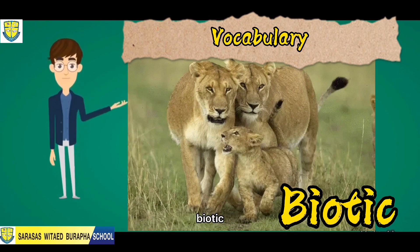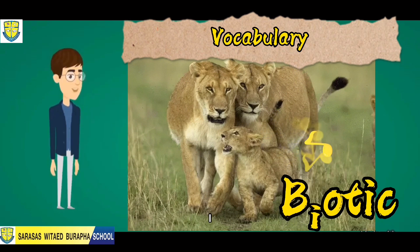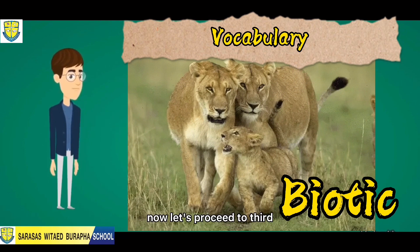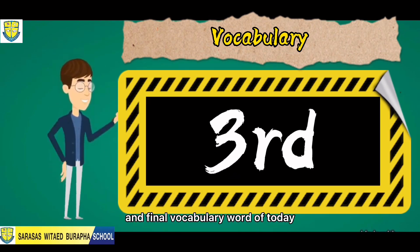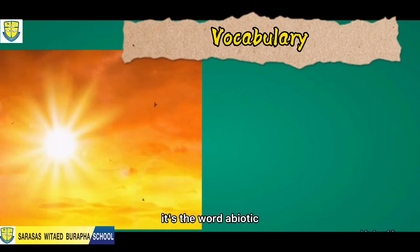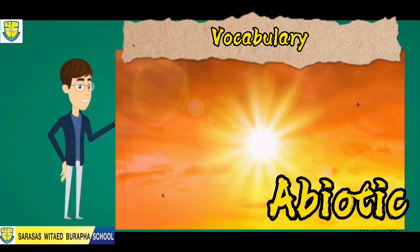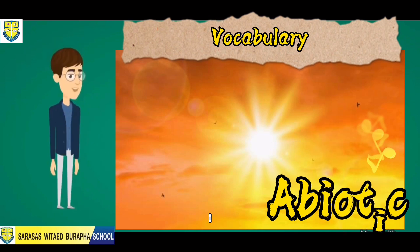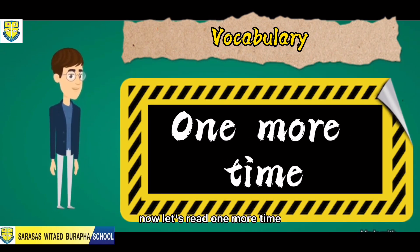Let's spell the word biotic: b-i-o-t-i-c. Very good. Now let's proceed to our third and final vocabulary word of today. It's the word 'abiotic.' Let's spell abiotic: a-b-i-o-t-i-c.